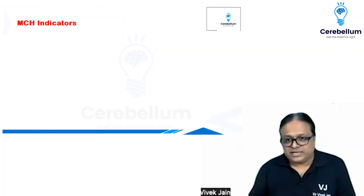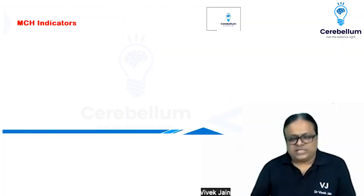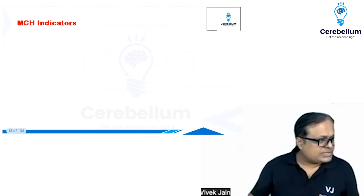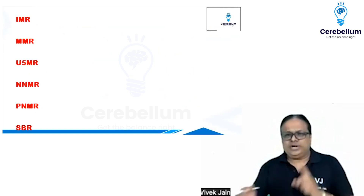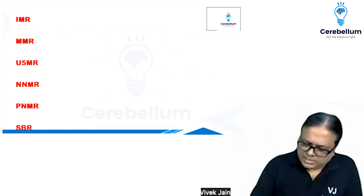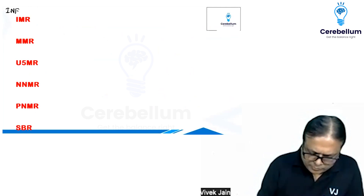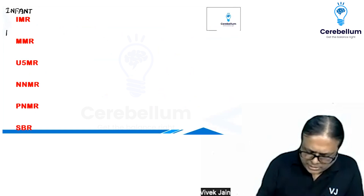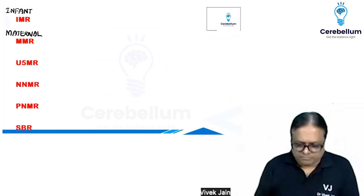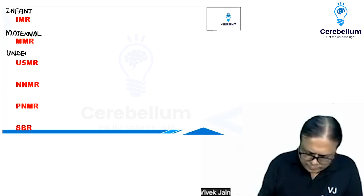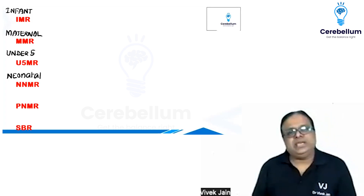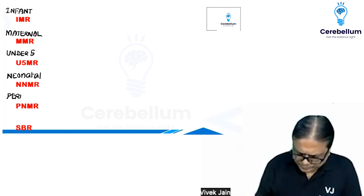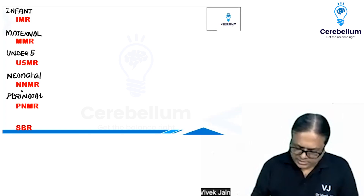Maternal and child health indicators — the important ones we need to know are these six: IMR, MMR, U5MR, NNMR, PNMR, and SBR. IMR is infant mortality rate, MMR is maternal mortality rate, U5MR is under-5 mortality rate, NNMR is neonatal mortality rate, PNMR is perinatal mortality rate, and SBR is stillbirth rate.